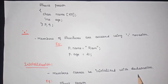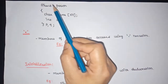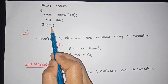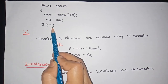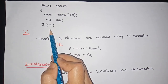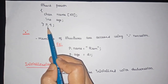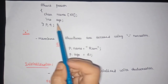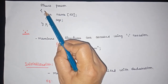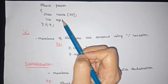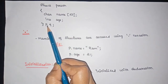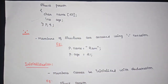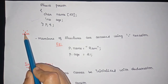The third way to declare a structure variable is to write the variable list directly before the semicolon at the end of the structure definition. So inside the curly braces we have member variables, and outside the curly braces before the semicolon we declare the structure variables. This means there is no need to write a separate 'struct person p' declaration later.